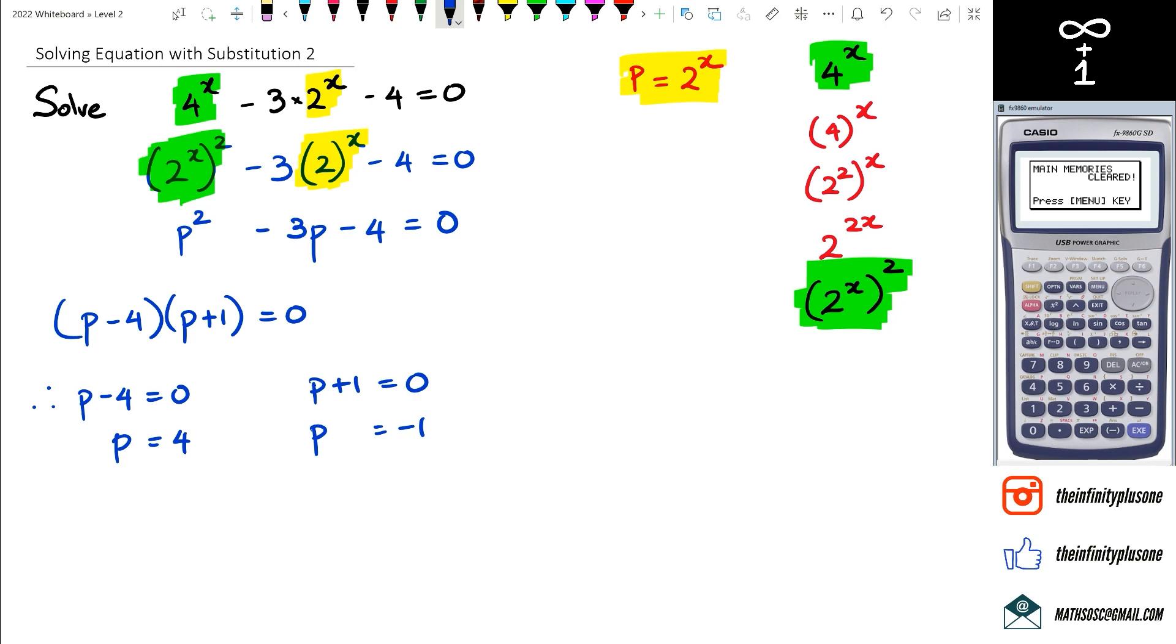So we can't just leave the answer as P. We've actually got to go back and figure out what x is. So we do know P = 2^x.